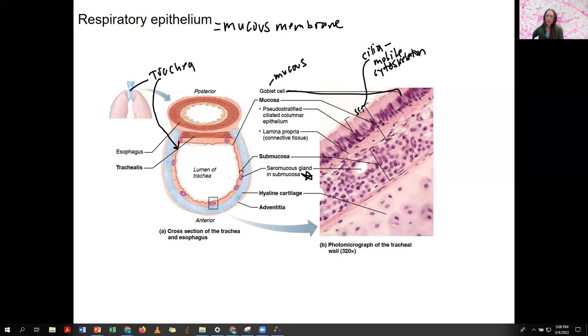The cilia are located on these pseudo-stratified columnar epithelial cells, which look like they're stratified, but they're not. They're just kind of funky-shaped—that's pseudo-stratified. And they're ciliated. Their structure is important for their function in that respiratory passageway.